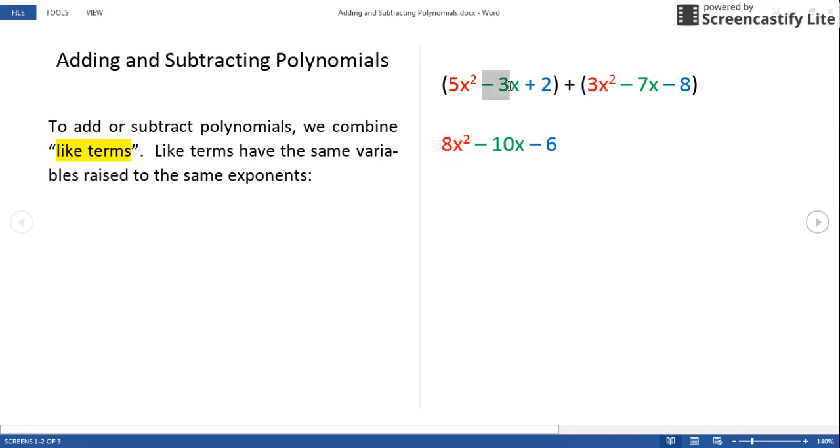Here for our x's, -3x and -7x, they both have negative signs, so we'll keep that sign and add the numbers together. -3 minus 7, that gives us -10x.